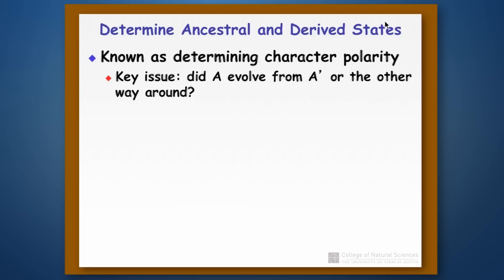The key issue here is when we look at a set of characters, did A evolve from A' — in which case A would be the derived character state? Or did A' evolve from A? If A' evolved from A, then A' is the derived character state and the synapomorphy — the thing that we want to use to group things together.